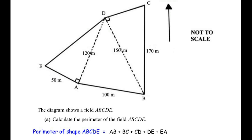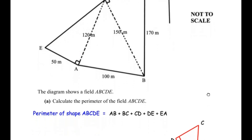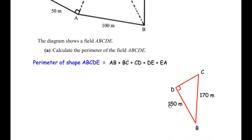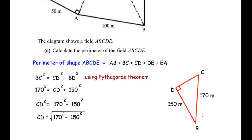This triangle is right angled because in the diagram angle D is 90 degrees. Let me separate this triangle and redraw it. Here we have redrawn triangle CDB — the length of BD was 150 meters and BC was 170 meters. We need to find the length of CD. BC represents the hypotenuse because it is opposite to the 90 degree angle. So we can use Pythagoras' theorem: BC squared equals CD squared plus BD squared.